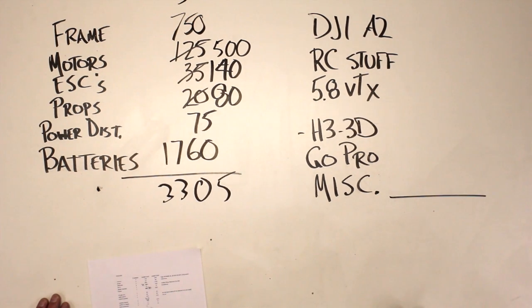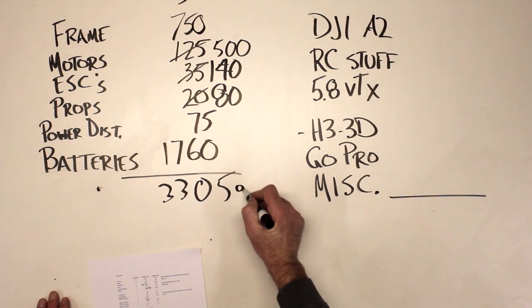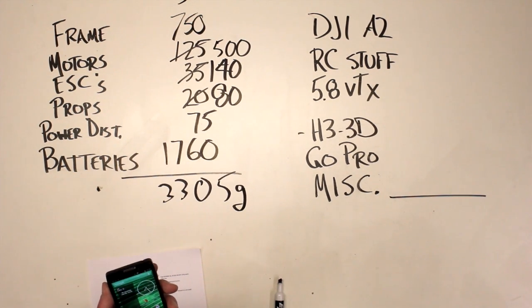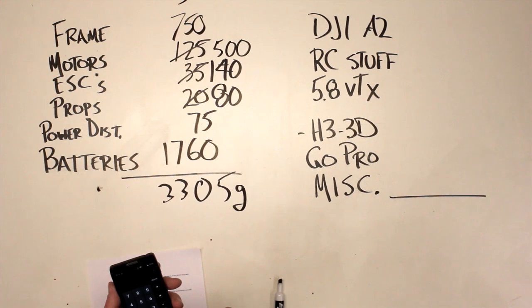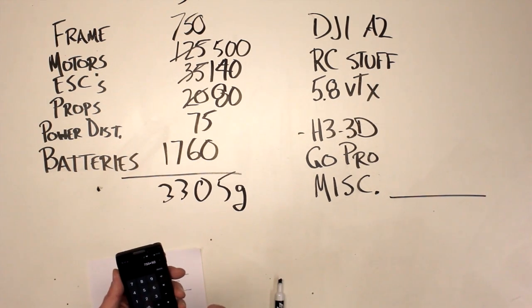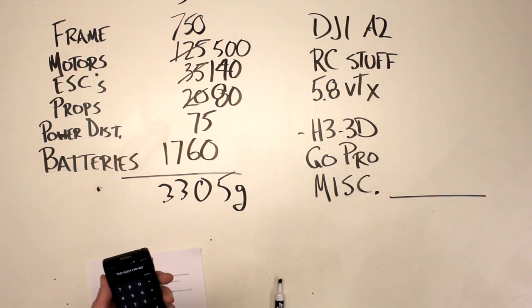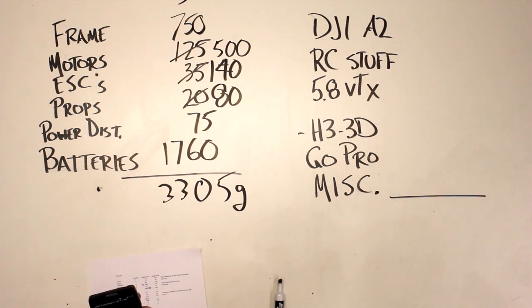3,305 ends up being the weight for our mechanical stuff: frame, motors, ESCs, batteries. So that's 3,305 grams, and I'm just going to double check that on my phone. This video is not going to be the most interesting video you ever see, so my apologies. 750 plus 500, plus 140, plus 80, plus 75, plus 1,760, equals 3,305, that's right.